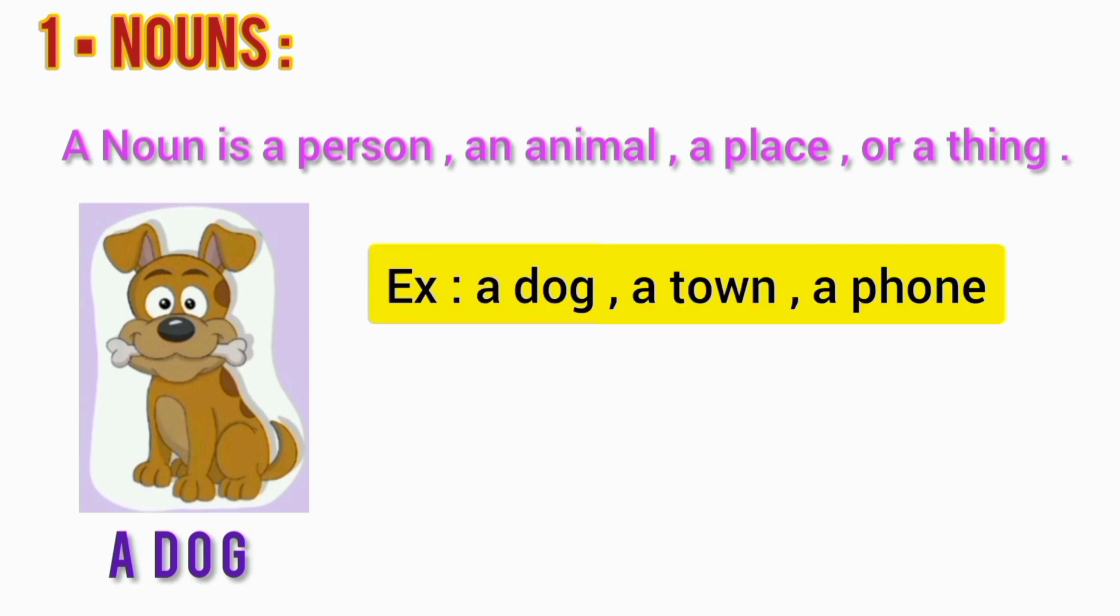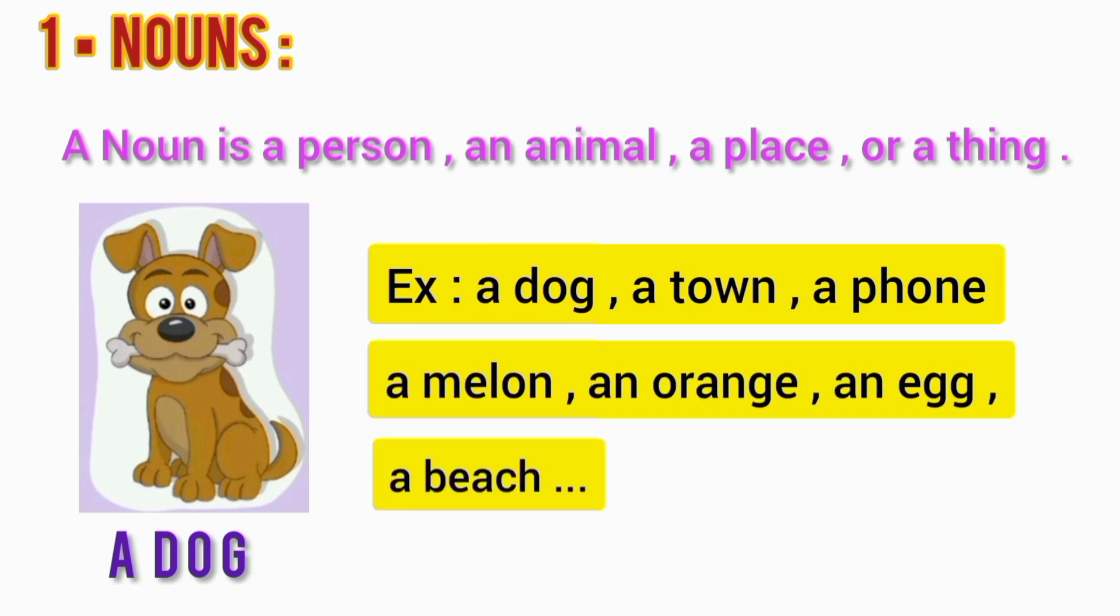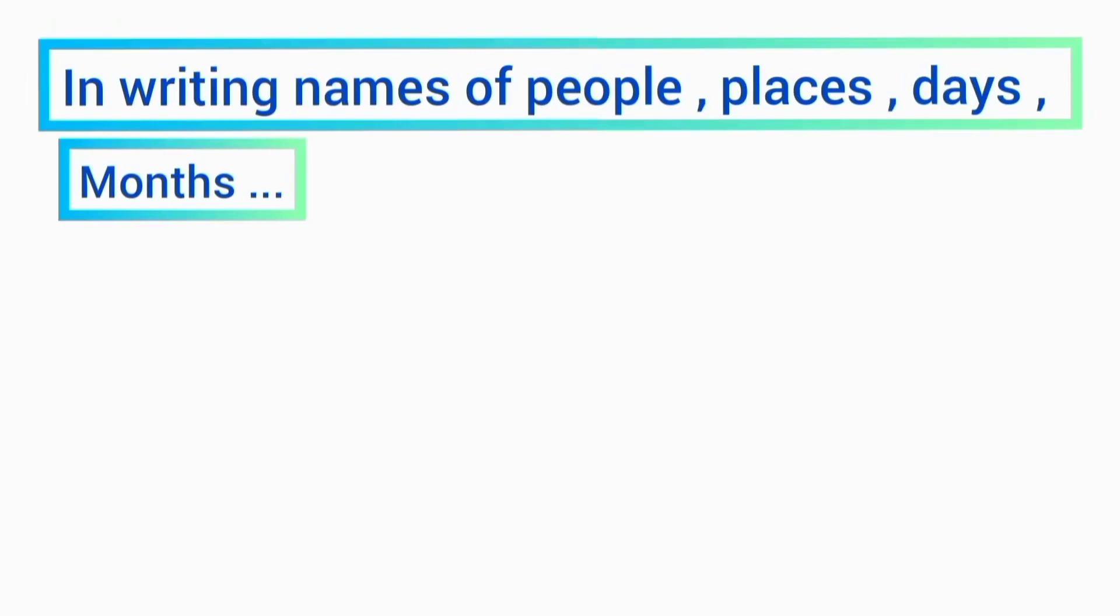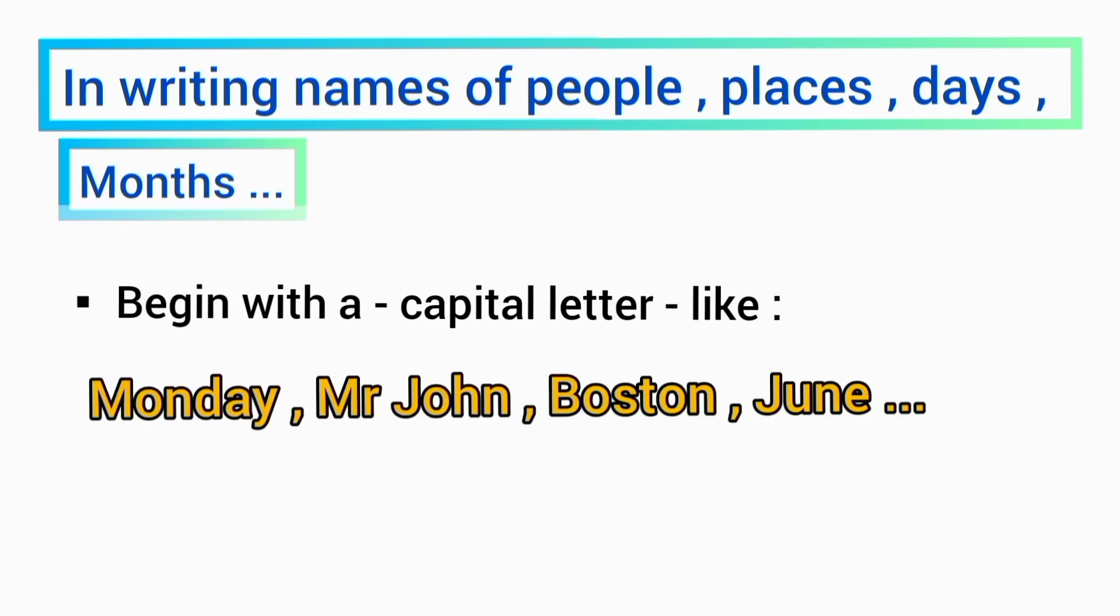For example, a dog, a town, a phone, a melon, an orange, an egg, a beach. In writing, names of people, places, days, and months begin with a capital letter, for example Monday, Mr. John, Boston, June.